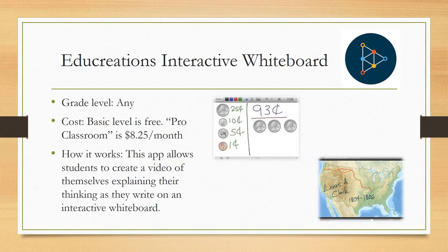Another app I really liked was from Edgy Creations — it's their interactive whiteboard. Again, any grade level can use this; the basic level is free, and there's a pro classroom version for $8.25 a month. This app allows students to create a video of themselves explaining their thinking as they write on an interactive whiteboard. I love this idea. I showed an example where students figure out how to make 93 cents — they're putting together coins, and while you see this in the video the student would also be talking and explaining how they came up with 93 cents.